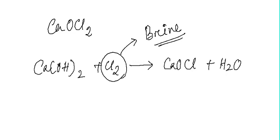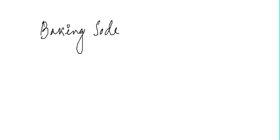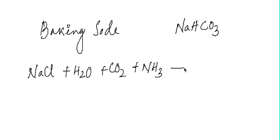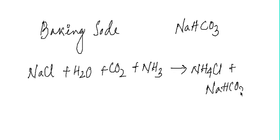Another very commonly known salt is baking soda, which is used in our kitchen to prepare crispy and tasty food. The formula of baking soda is NaHCO₃, also known as sodium hydrogen carbonate or sodium bicarbonate. It is prepared when NaCl reacts with water, carbon dioxide, and ammonia, producing ammonium chloride and baking soda (NaHCO₃).